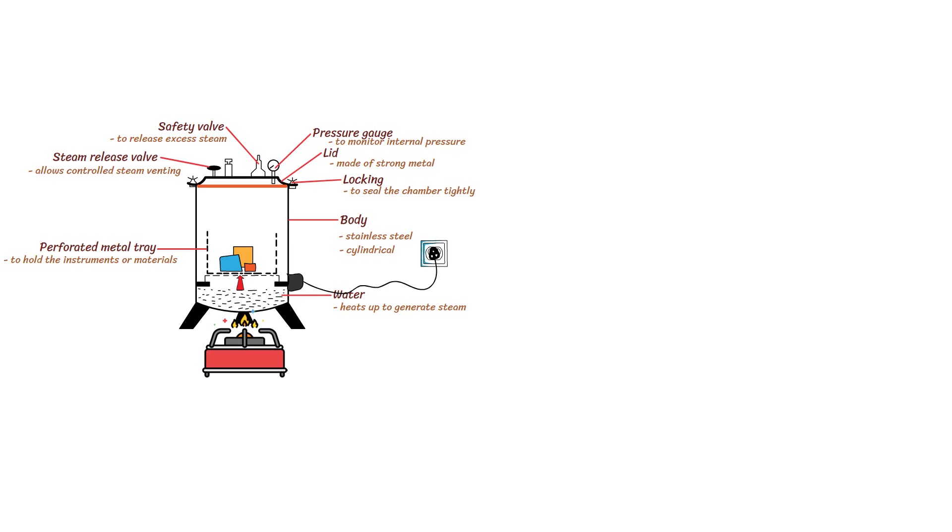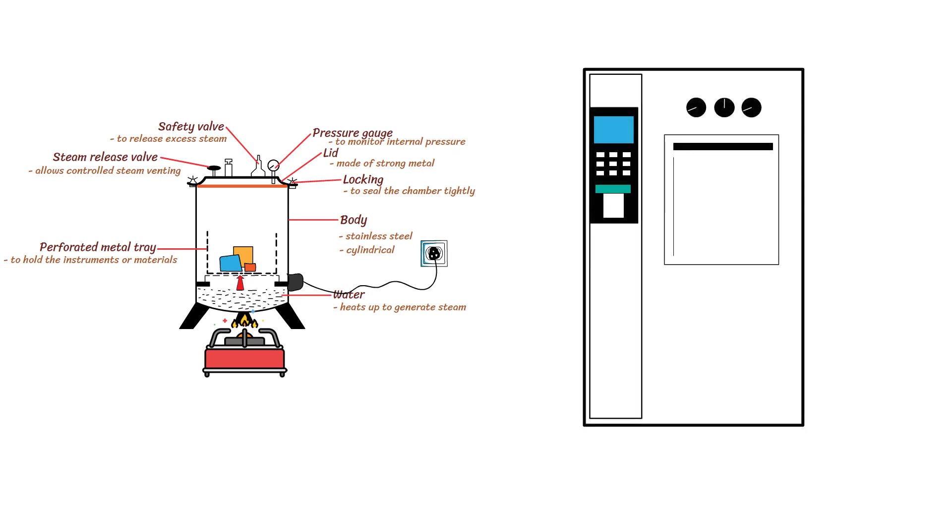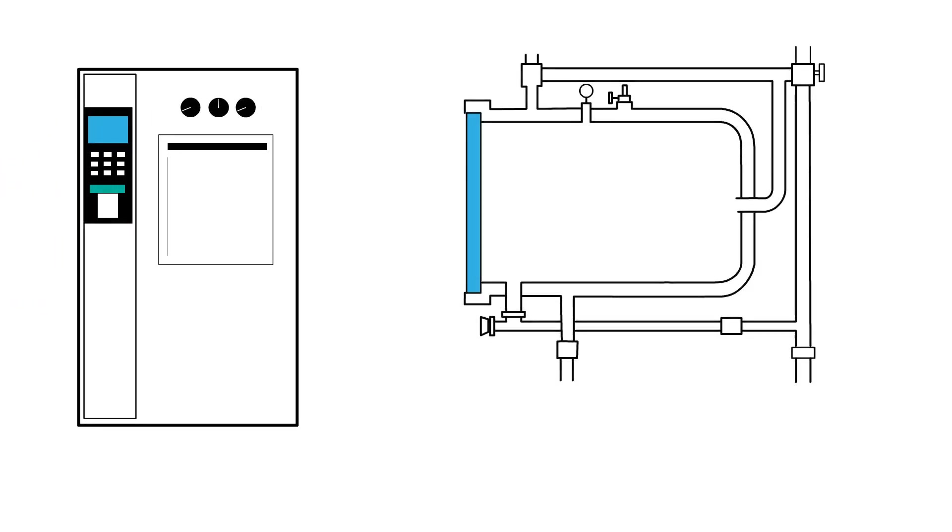On the other hand, modern autoclaves consist of a sturdy pressure-resistant chamber, typically made of stainless steel. They are designed to withstand high temperatures and pressures. It includes an outer jacket for preheating and efficient steam circulation to ensure uniform temperature distribution.